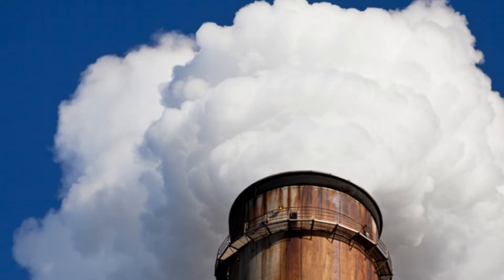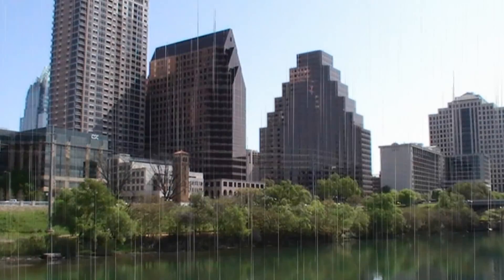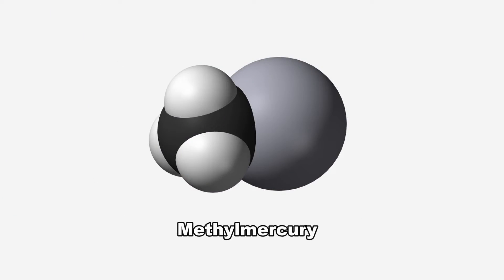Mercury in the air eventually settles into water, or onto land where it can be washed into water. Once deposited, certain microorganisms can change it into methylmercury, a highly toxic form that builds up in fish, shellfish, and animals that eat fish.